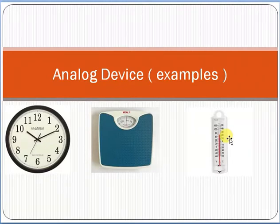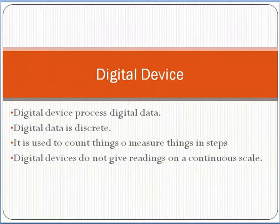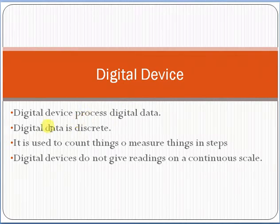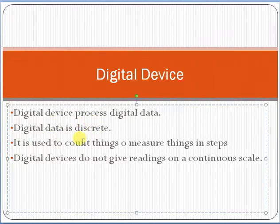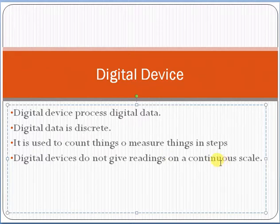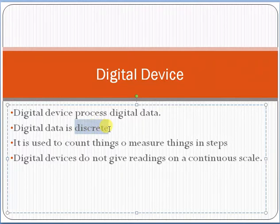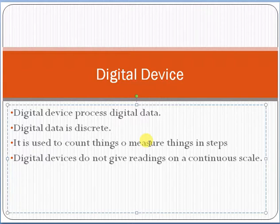Now coming towards the digital device. A digital device processes digital data. Digital data is discrete — discrete means it counts or measures things in steps, step by step. A digital device does not give readings on a continuous scale, so it is totally different from an analog device. Discrete means counting things one by one, step by step.